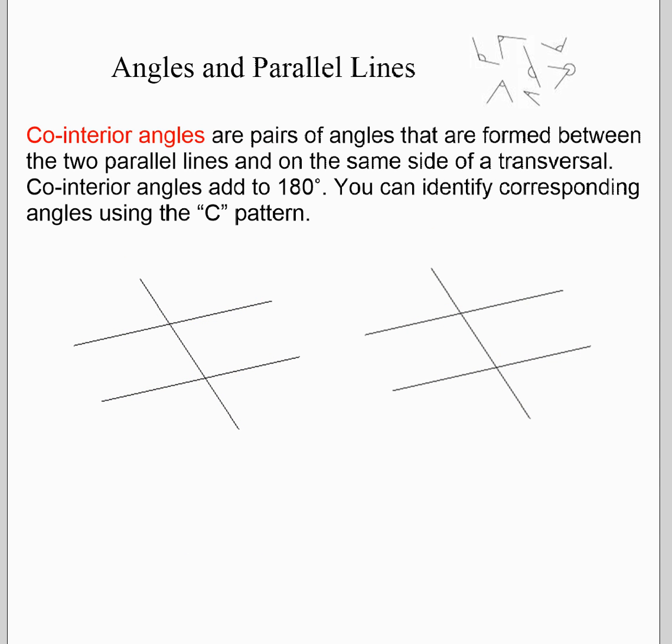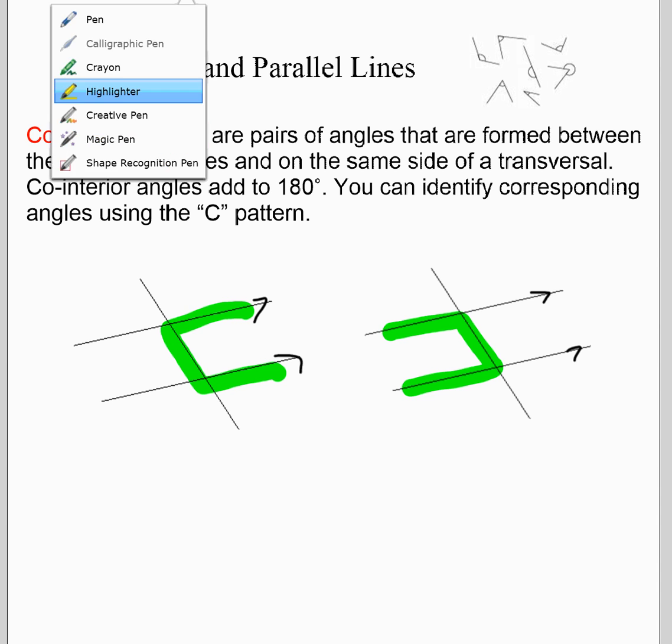The last one is called co-interior. In the investigation, they called it same side interior. So again, if I have my parallel lines, I can find co-interior angles by the letter C. So using what's called the C pattern, like that, or one here, I can identify co-interior angles.